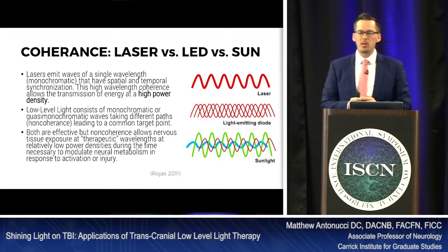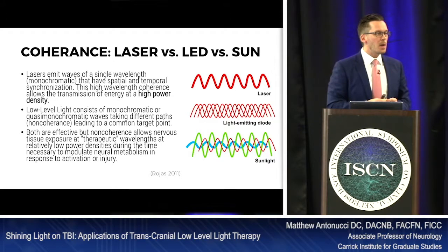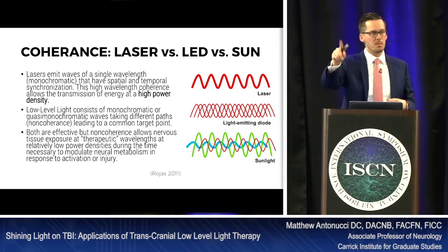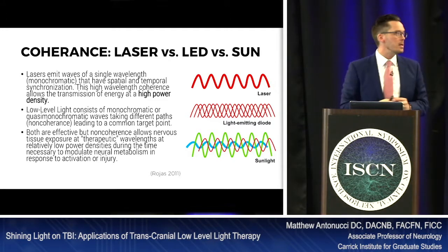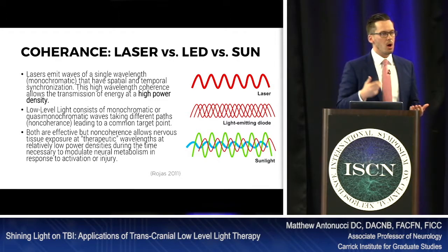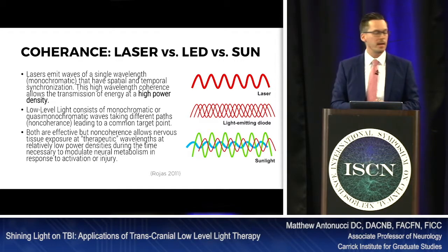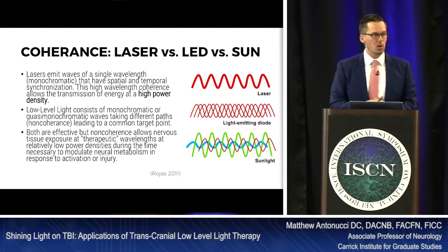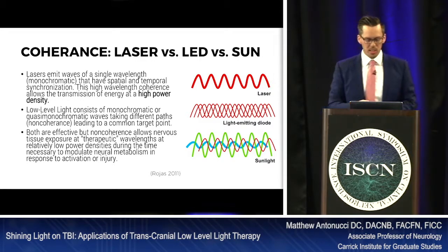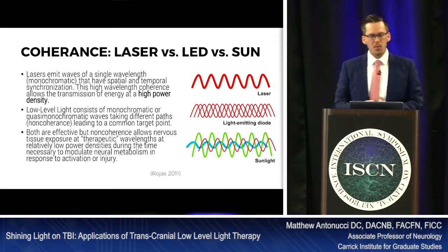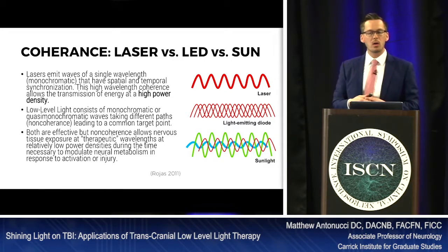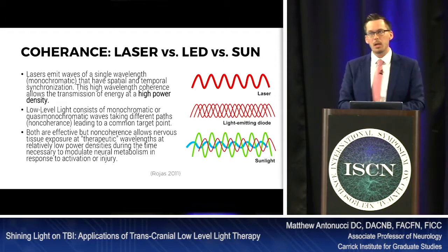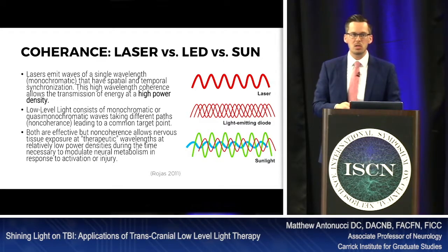Coherence refers to the type of wavelength emitted. Lasers emit monochromatic, coherent wavelengths — coherent in time and space — producing a single focused beam. Low-level light therapy LEDs are non-coherent but still monochromatic. Sunlight is completely non-coherent and multi-chromatic. Research by Rojas in 2011 found both are effective; however, non-coherent light seems to affect nervous tissue a little better because you can achieve lower tissue energy densities with less heating.